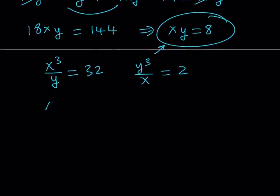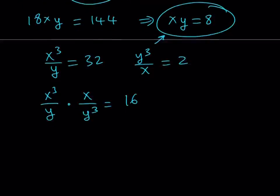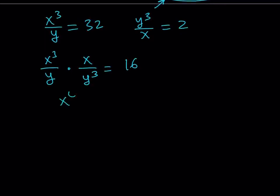What happens if I divide them? So x cubed over y, multiply by the reciprocal of the second fraction, which is x over y cubed, is going to be 32 divided by 2, which is equal to 16. Let's go ahead and simplify this equation. I get x to the 4th divided by y to the 4th is equal to 16. And from here, if you take the fourth root of both sides, we're going to be getting two solutions.